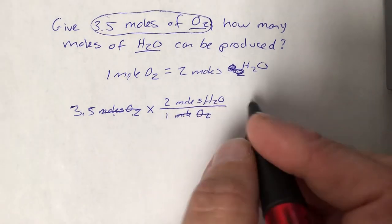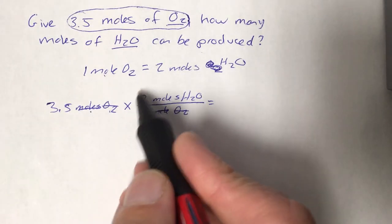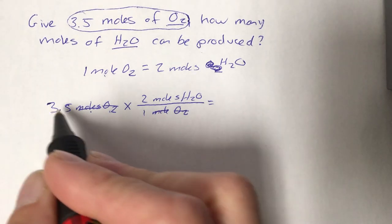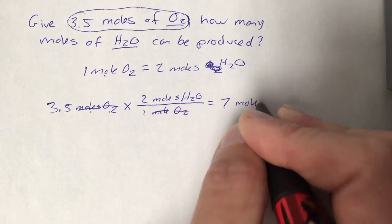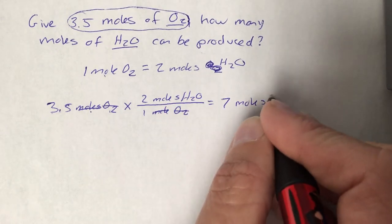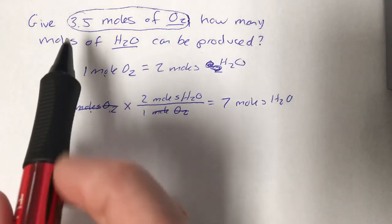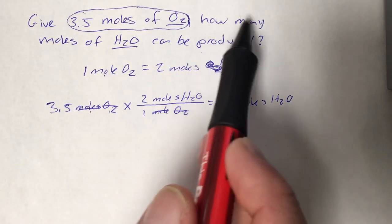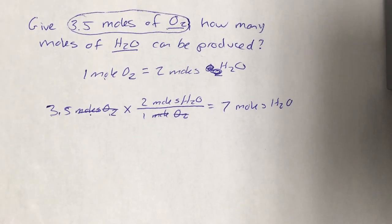I've got a one on the bottom of this that I can ignore. The two's on top. Whenever the number's on top we multiply by it. 3.5 times 2 is 7. The unit is what we have left. Moles of water. And again we always want to go back and make sure that's what we were asked to find. How many moles of water? Moles of water. We got our answer. We can be reasonably certain that what we did here was correct.